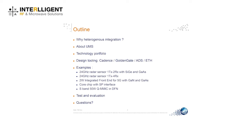The outline of my presentation is: first, why heterogeneous integration? Then about UMS — a few words — the technology portfolio of UMS, not only 3-5, but also we are more and more using silicon processes. Design tooling, which includes Cadence and Golden Gate for silicon, and ADS for 3-5 compounds, and more and more also ETH, which is a new tool from Keysight working with ADS.